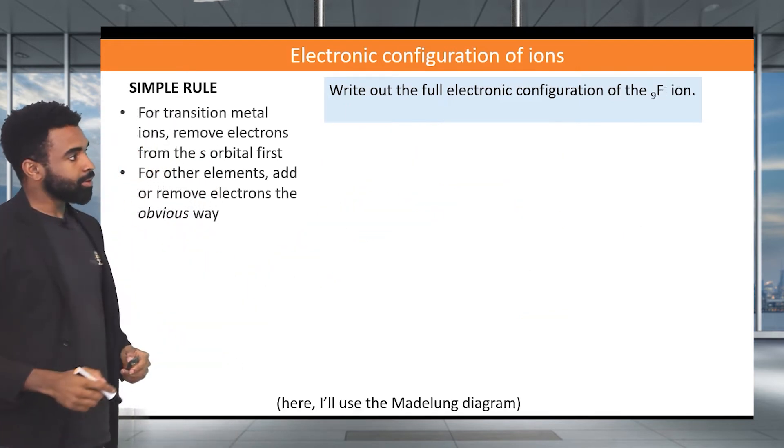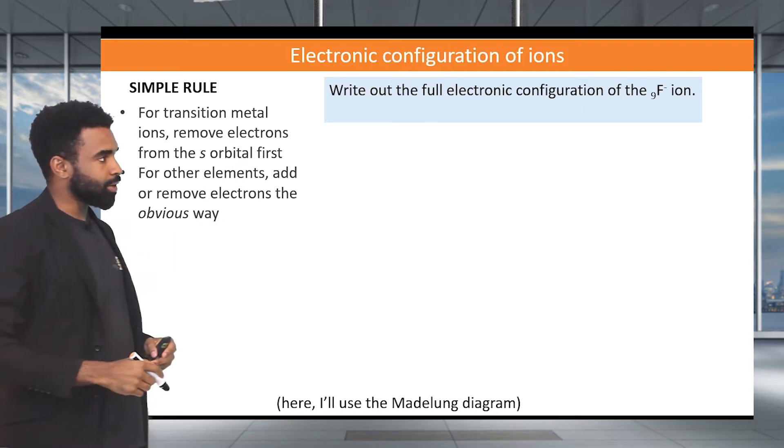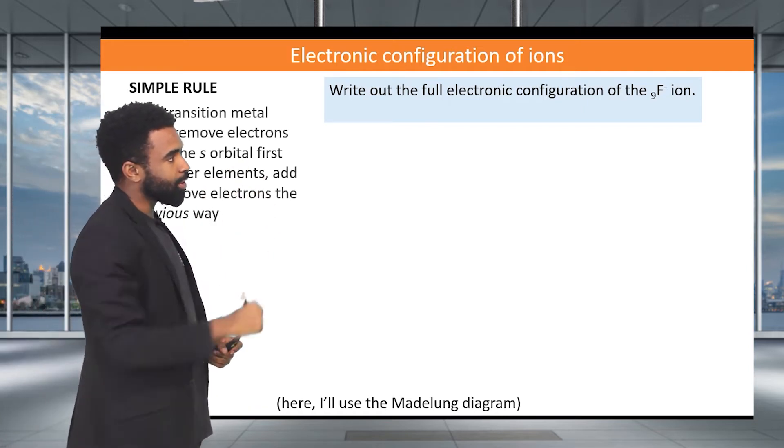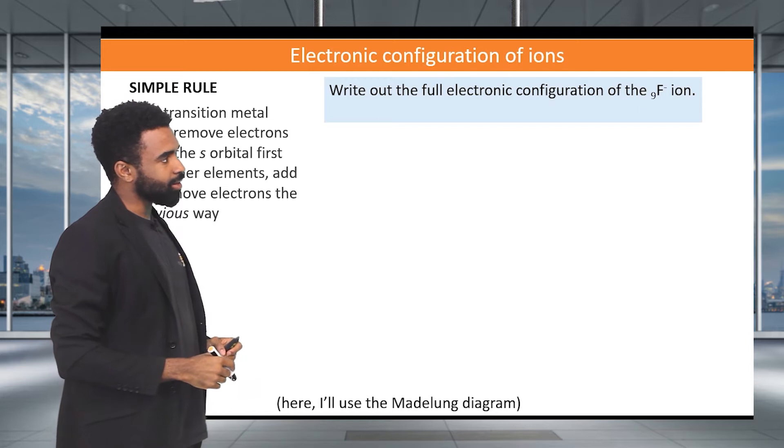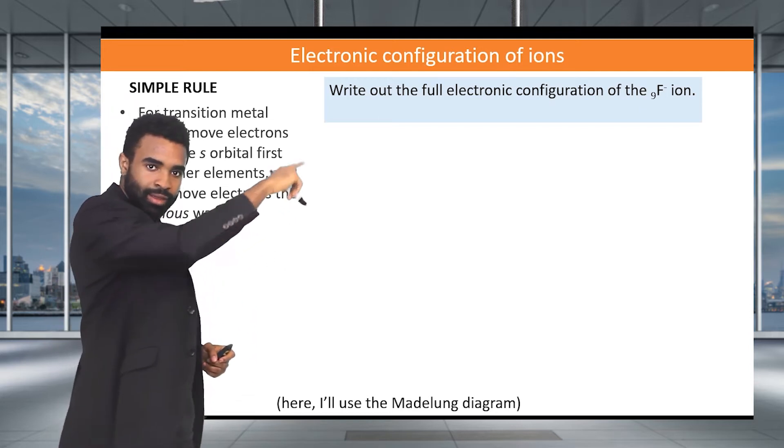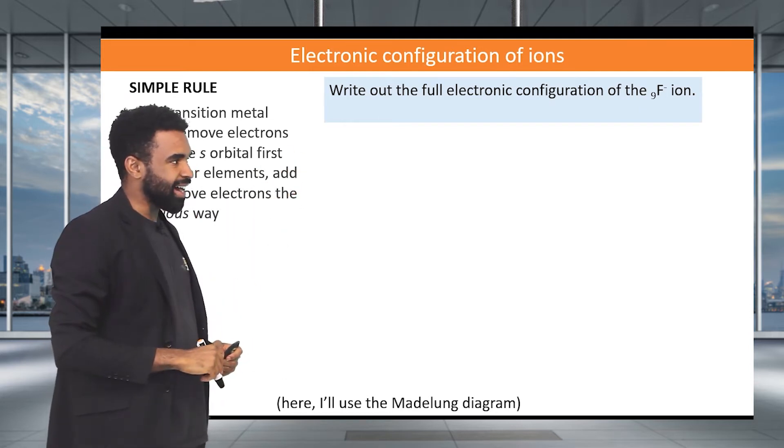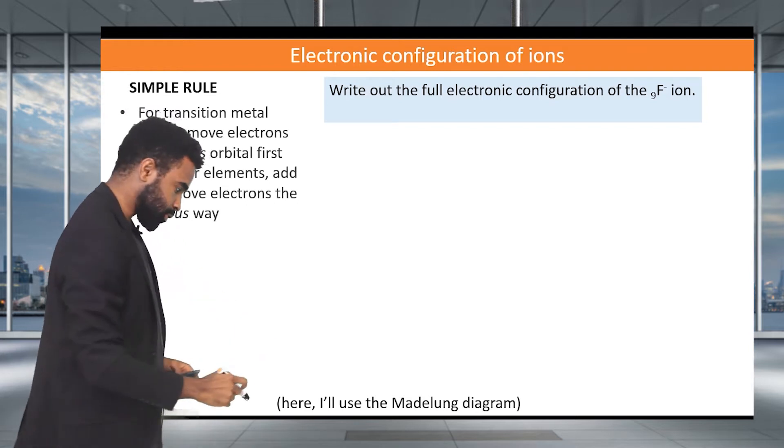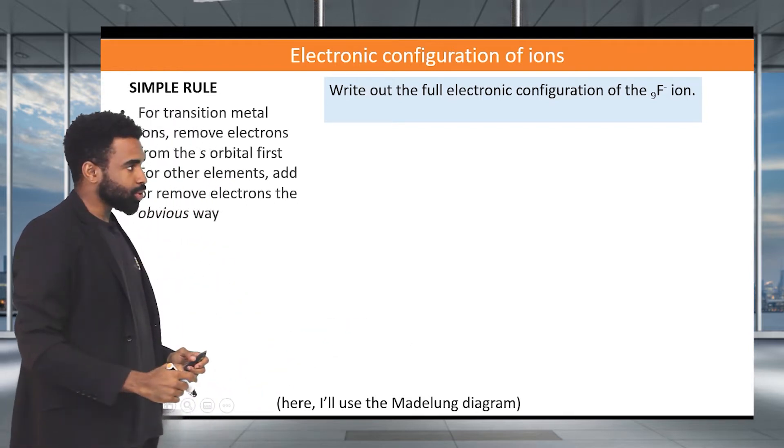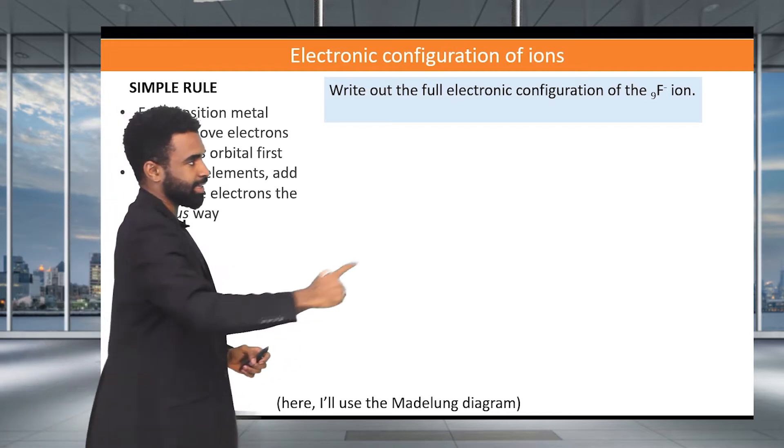Let's look at another one. It says write out the full electronic configuration of the fluorine mononegative ion. And I give you there the atomic number of nine. How do we do this? For this one I'm going to use the Madelung diagram approach. Hopefully you remember the Madelung diagram.